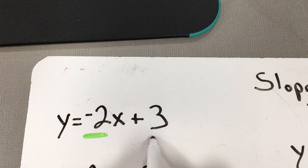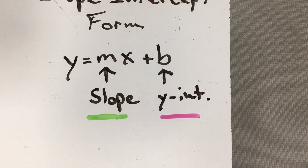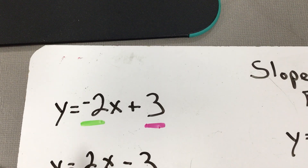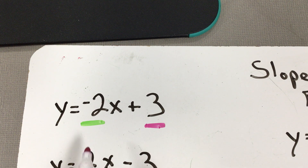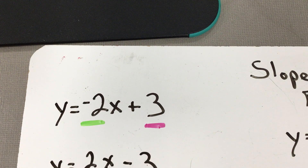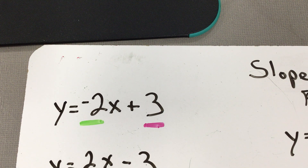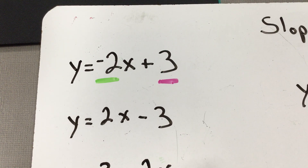The y-intercept is 3. Going back to y equals mx plus b: I substituted negative 2 in for m and 3 in for b. So when looking at an equation, whatever number is attached to that x is going to be your slope, and whatever comes afterwards is going to be your y-intercept.